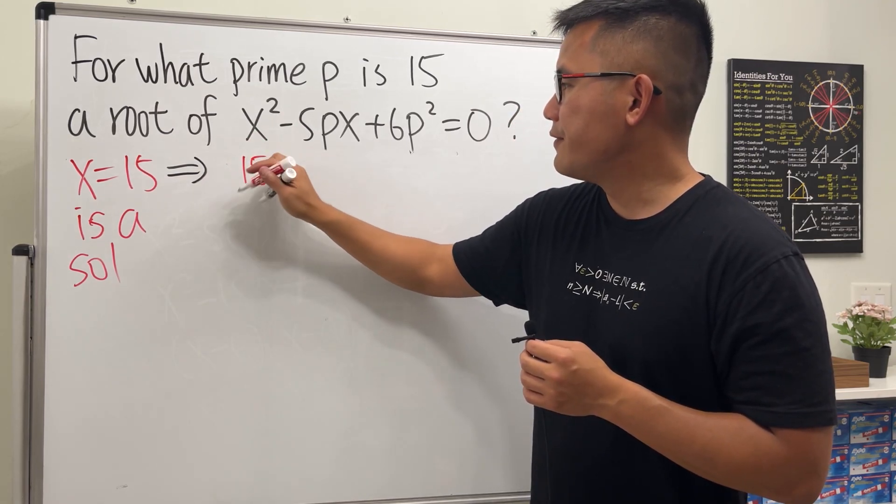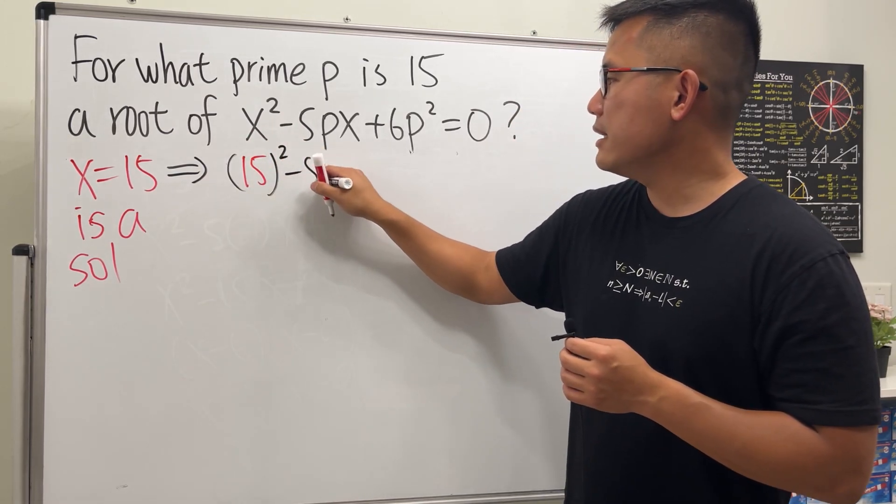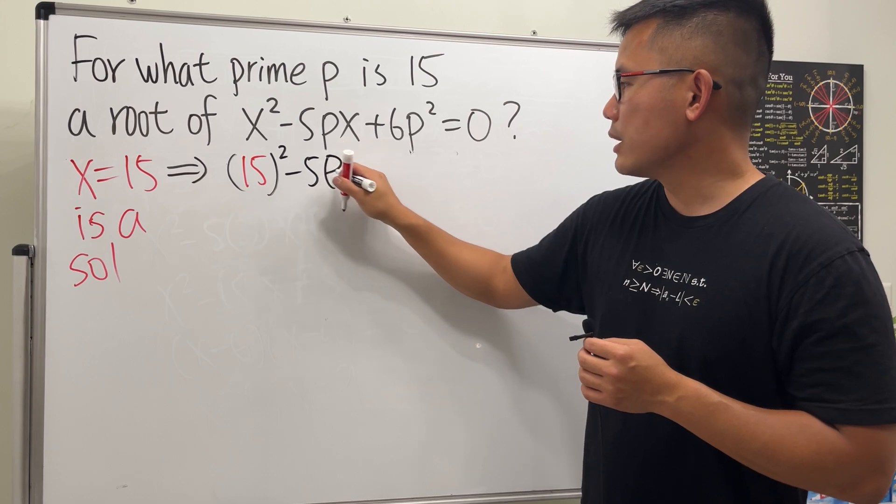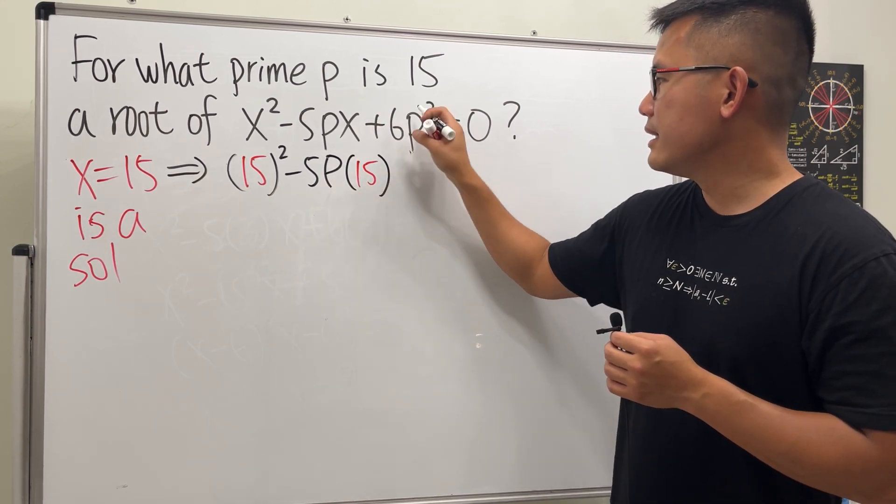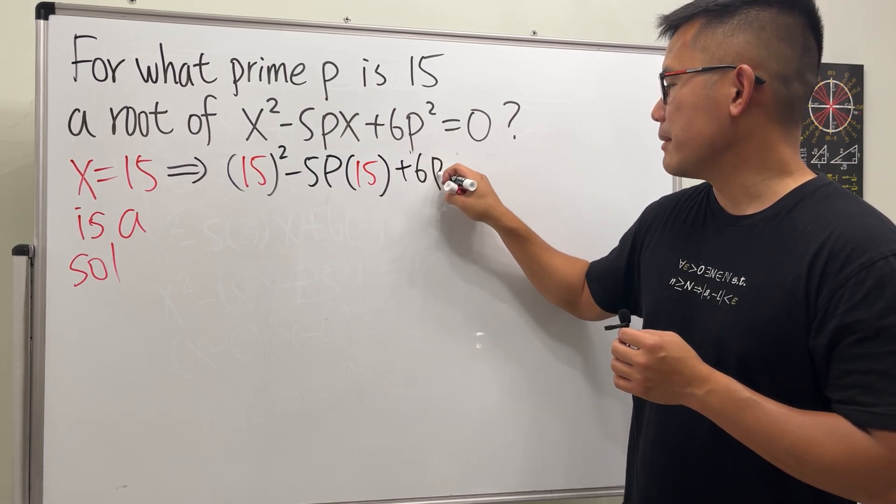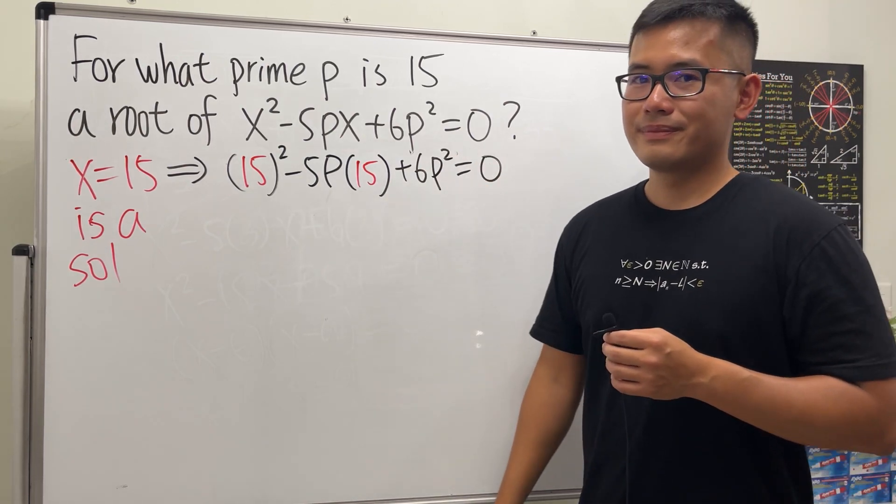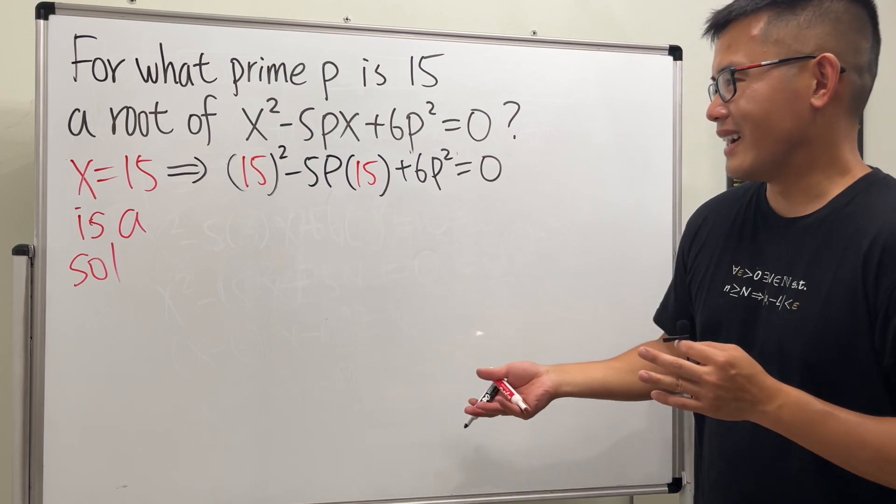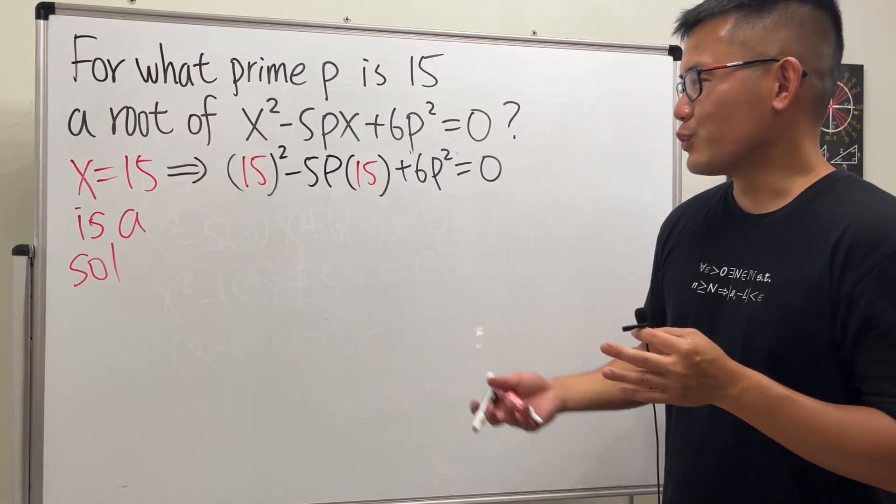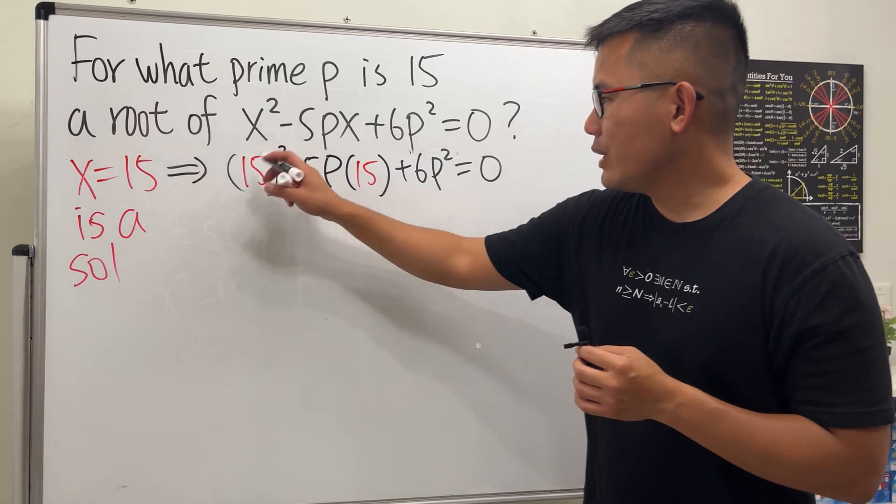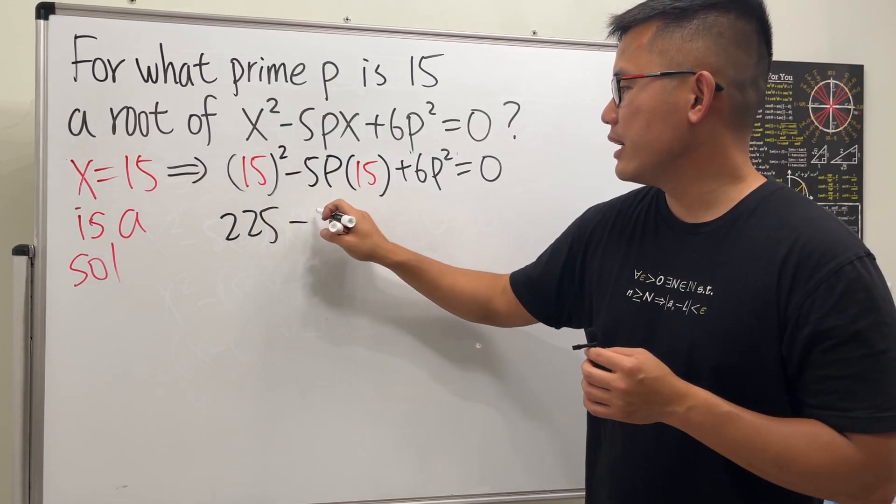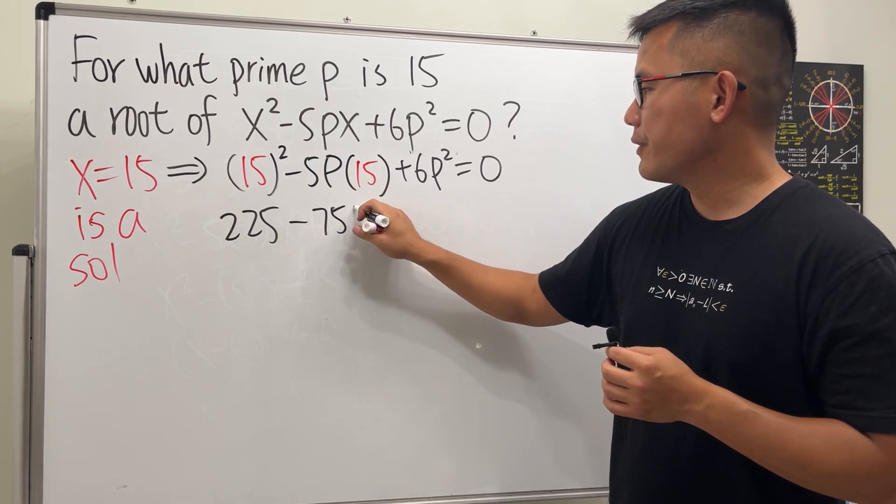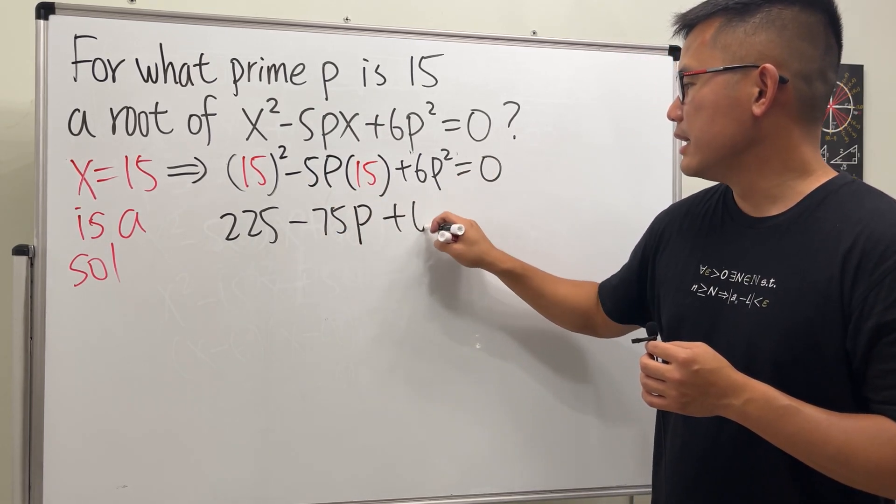So let's see. We will have 15² - 5P(15) + 6P² = 0. We don't know P, so let's put it down like this. So we are not trying to solve for x, we're actually trying to solve for P. Right, and then just work this out. We have 15² which is 225, this times that we get -75P, and then +6P². This equals zero.